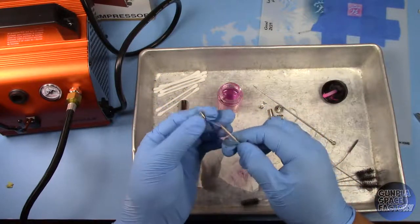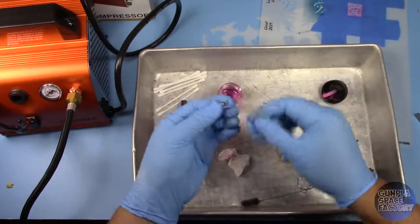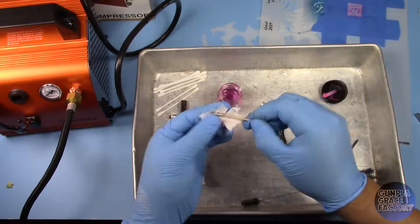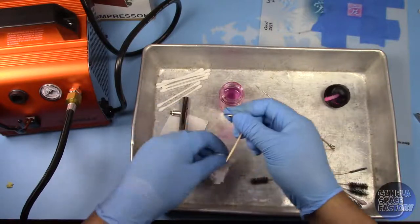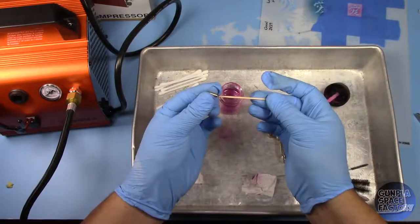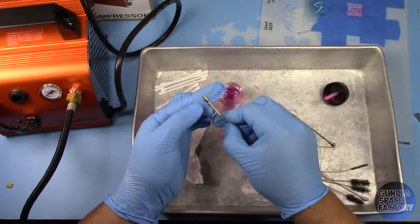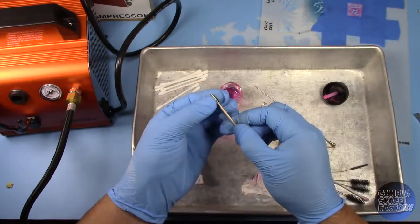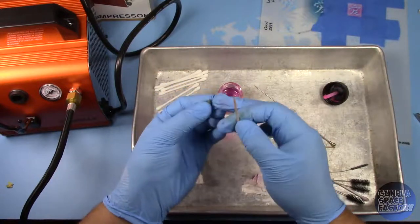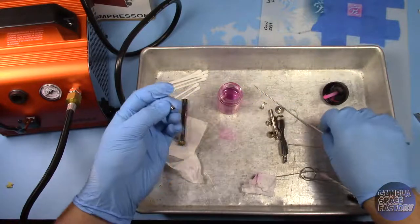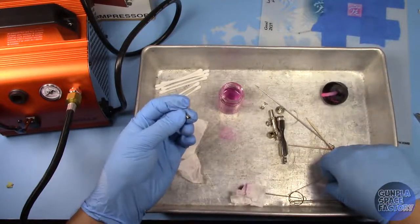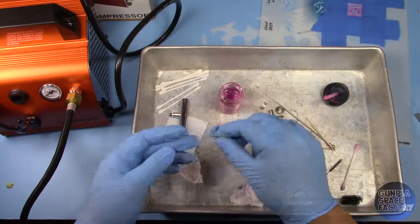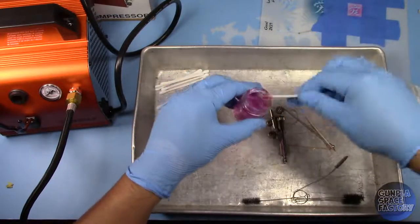The nozzle takes more time to clean but eventually all the paint is removed. Once the toothpick comes out clean from the nozzle, you're set. And finally, I scrubbed the old dried up paint from the jar and the airbrush jar adapter.